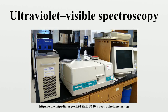UV-Vis spectroscopy is also used in the semiconductor industry to measure the thickness and optical properties of thin films on a wafer. UV-Vis spectrometers are used to measure the reflectance of light, and can be analyzed via the Forouhi-Bloomer dispersion equations to determine the index of refraction and the extinction coefficient of a given film across the measured spectral range.